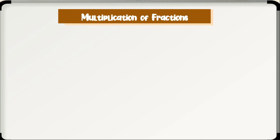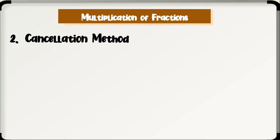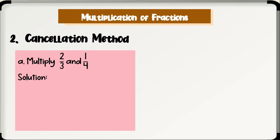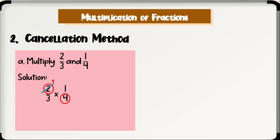A shorter way of multiplying fractions is by using the cancellation method. If the cancellation method is done properly, there is no need to simplify the product anymore — the fraction will already be in its lowest term. For example, multiply 2 over 3 and 1 over 4. Step 1: find the common factor of any numerator and any denominator. In this example, 2 and 4 have a common factor. Step 2: cancel common factors — the common factor is 2. Hence, 2 divided by 2 is 1 and 4 divided by 2 is 2. Rewrite using the uncancelled factors and multiply: 1 times 1 over 3 times 2, which equals 1 over 6. Therefore, 2 over 3 times 1 over 4 is equal to 1 over 6.